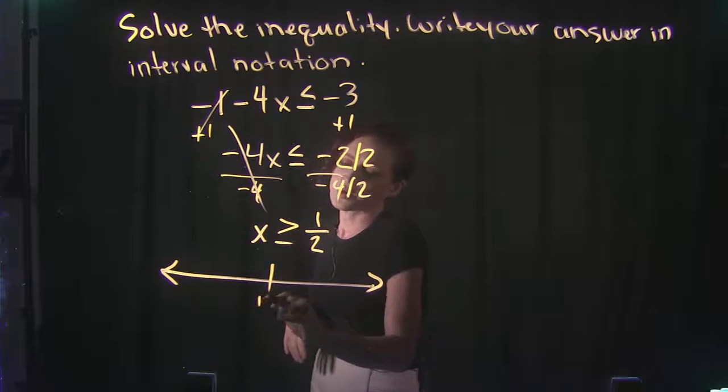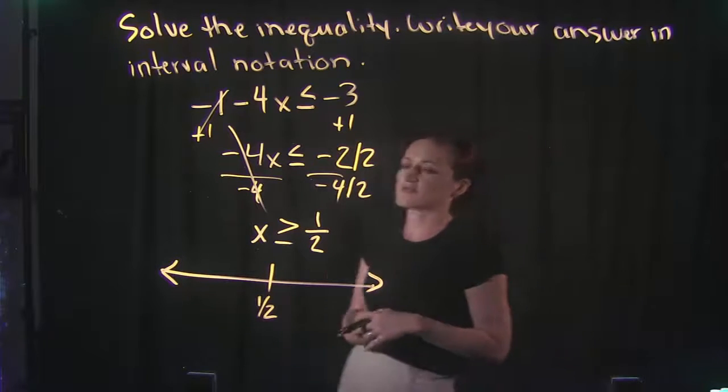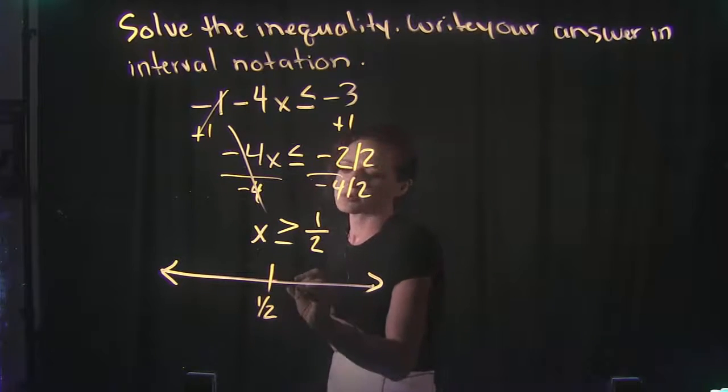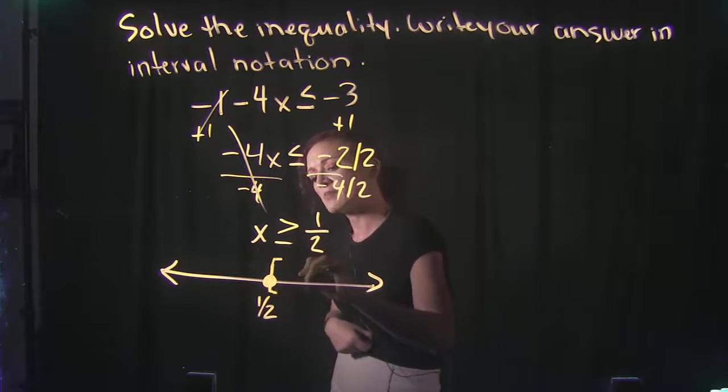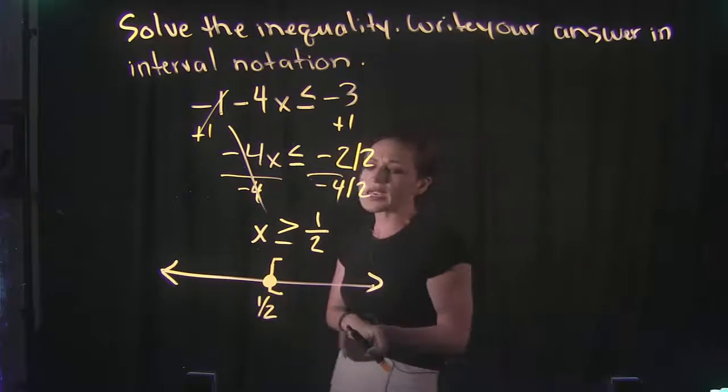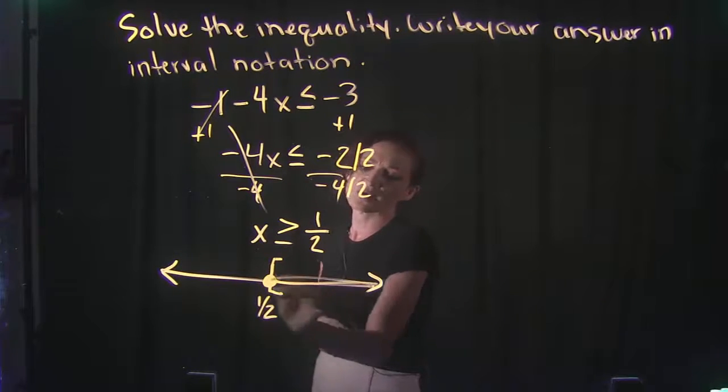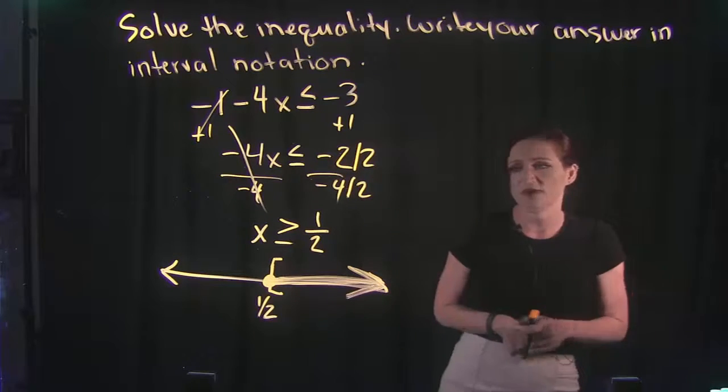Now, we're talking about the number 1 half. And it says x is greater than or equal to 1 half. Now, a greater than or equal symbol means we have a solid dot on 1 half. Well, remember, that's represented by a bracket. And it says it's greater than or equal to 1 half. So everything greater than that is to the right. So we're going to be shading to the right here.